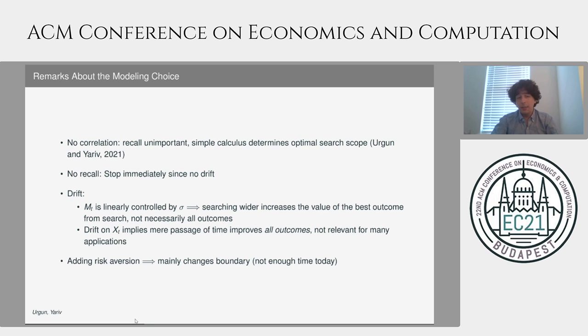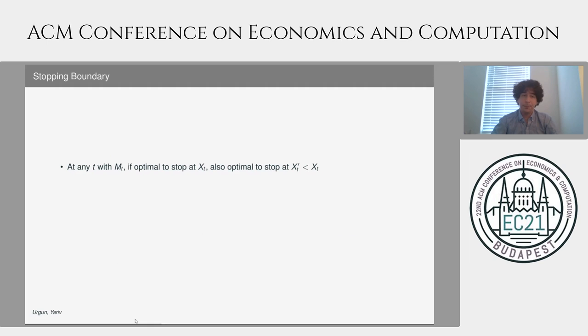Finally, adding risk aversion is something you can do instead of assuming risk neutrality, which is something we actually do in the paper, but I won't have time for it today.